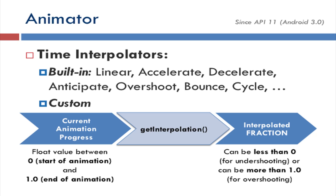If your requirements are not met by the built-in interpolators, you can specify your own. For that, you override the TimeInterpolator and its getInterpolation method. The input value of this method is the current time progress, uniformly distributed between 0 and 1. You then tweak that progress to some other float value — which is not necessarily between 0 and 1. For example, in overshoot and anticipate interpolators, the fraction goes outside this range.